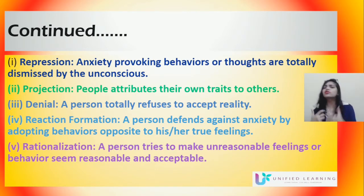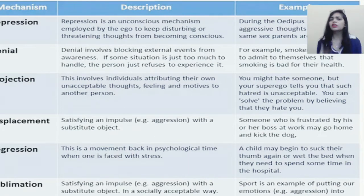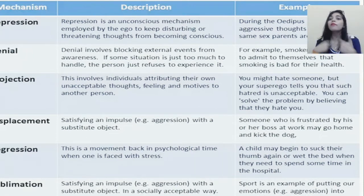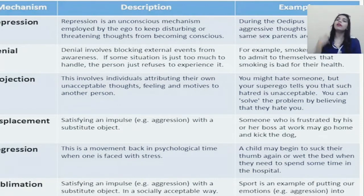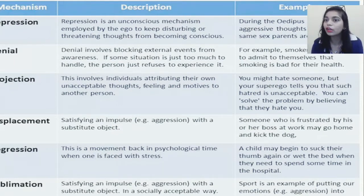Projection is when people attribute their own traits to others. For example, you might hate someone, but your Superego tells you such hatred is unacceptable. So you solve the problem by believing that they hate you — you have projected your own feelings onto the other person.